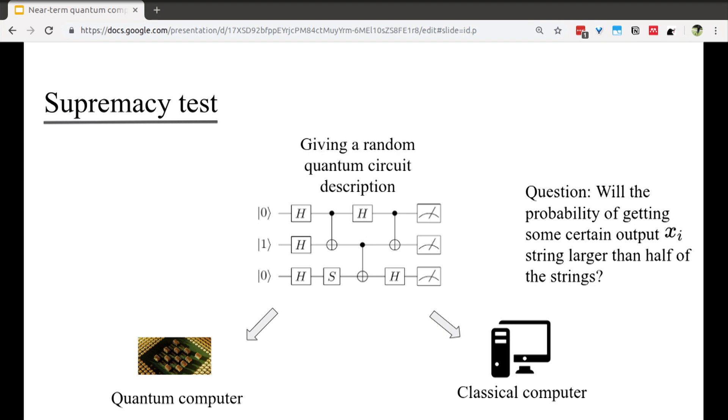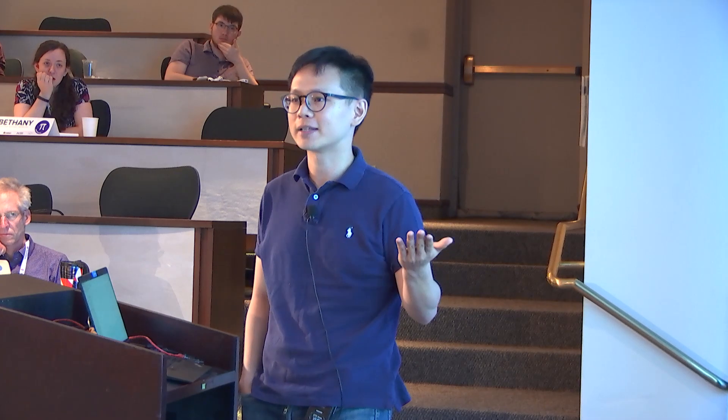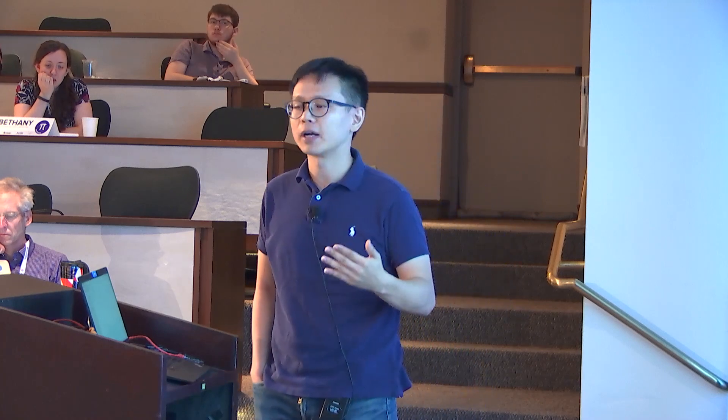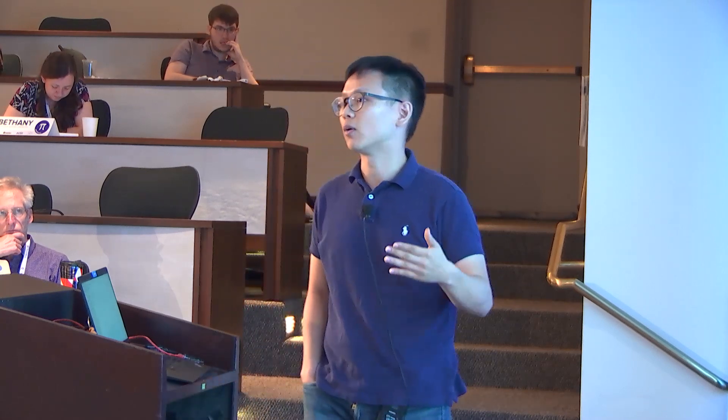With some hardness assumption, a classical computer can never do this without fully simulating the whole circuit. Fully simulating a 50-qubit quantum circuit requires memory we cannot build today. So if our quantum computer can give that solution, we've reached quantum supremacy — which would be a milestone. However, we're still maybe several years away. It still requires more than 50 qubits, and as classical simulation techniques improve — companies like Alibaba can simulate around 80 qubits — that number keeps increasing.